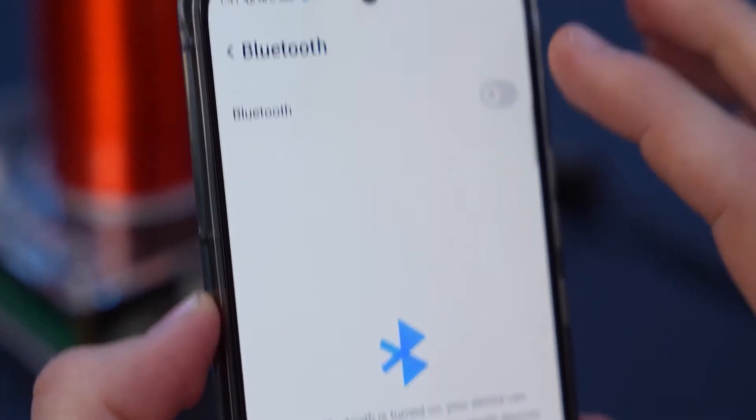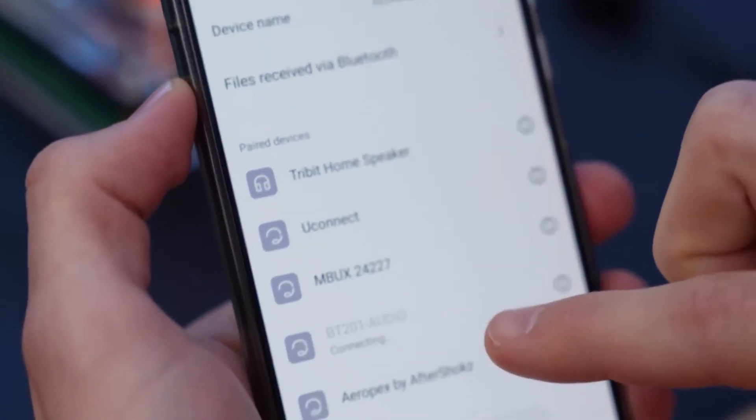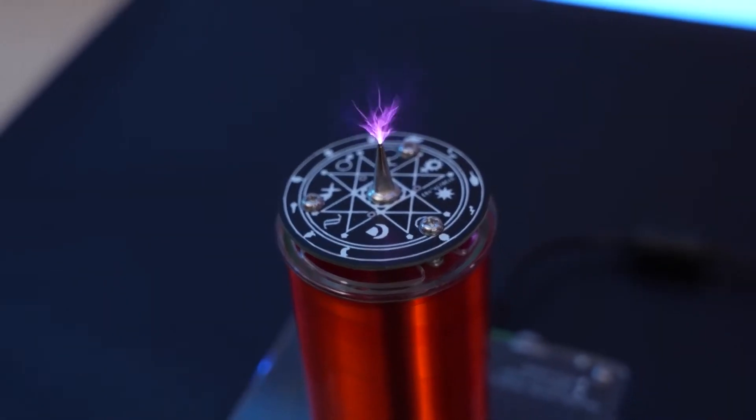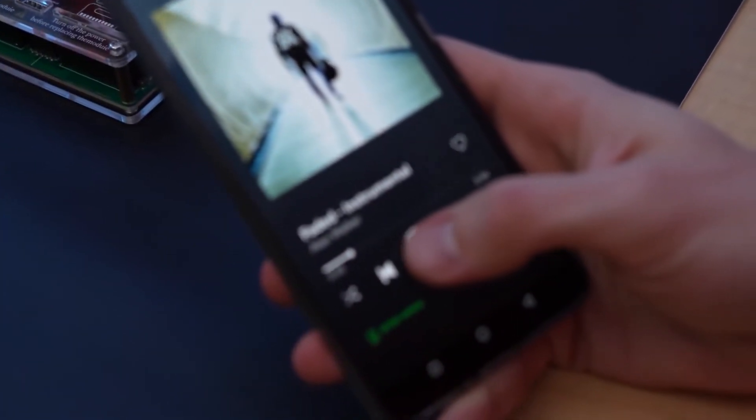But that's not all. Unlike the original Tesla coil, this thing is Bluetooth-enabled. So guess what? You can connect it to your phone and use this thing as a speaker.